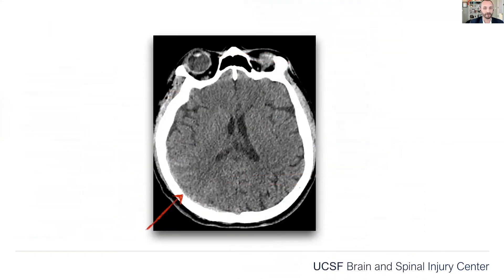Here's the CT scan, and here we come to the topic of the talk: subdural hematoma. This patient has a very small subdural hematoma — there's an arrow pointing right at it. You might think it's nothing, but in a patient where you're worried about dysfunctional platelets, this is something you'll definitely want to keep a close eye on.